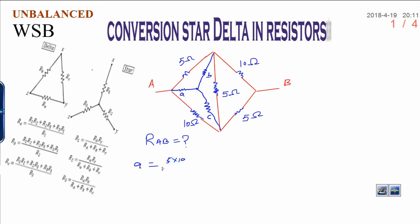5 into 10 divided by sum of all, that is 5 plus 10 plus 5. That will be 50 divided by 20, that is 2.5 ohms. This A is 2.5 ohms.